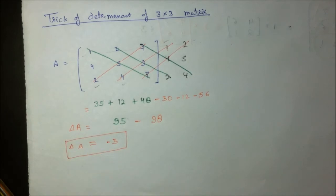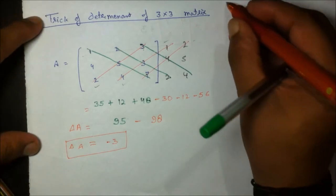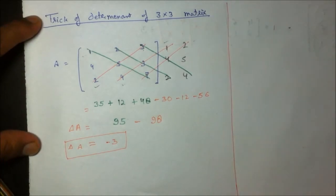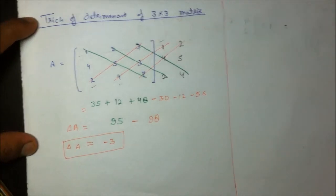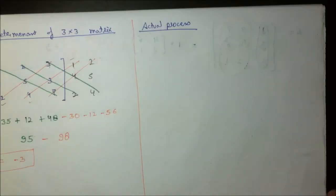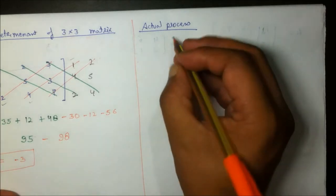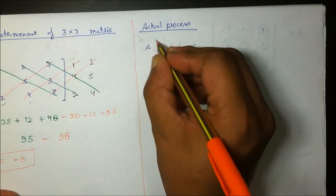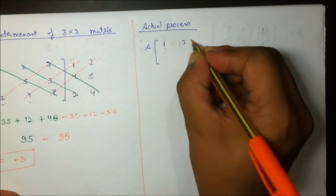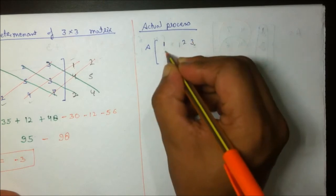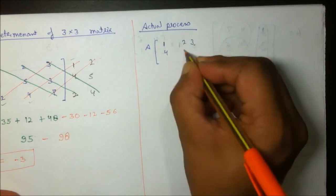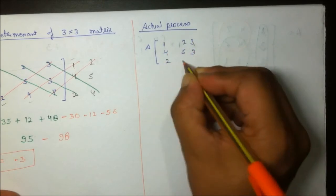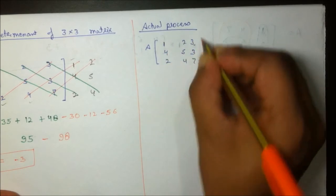For those who don't know the actual determinant solving process, let me show the standard procedure. I am taking the same matrix: [1, 2, 3; 4, 5, 3; 2, 4, 7].